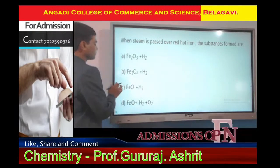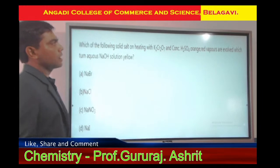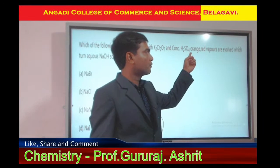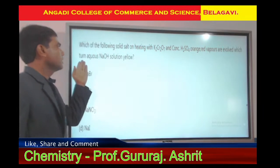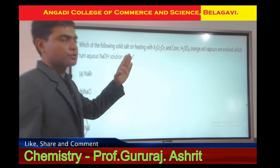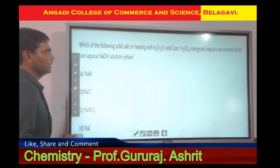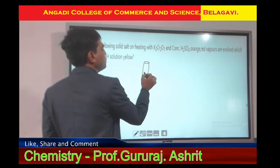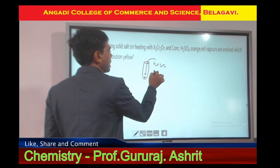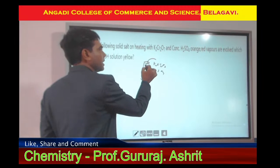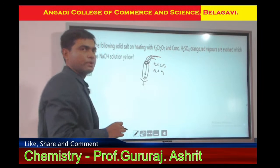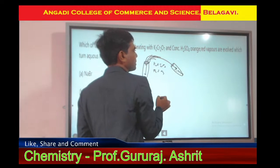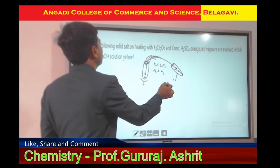Next, we move to the other question: which solid salt, on heating with potassium dichromate and concentrated H₂SO₄, evolves orange-red vapors which turn aqueous NaOH solution yellow? So, you take a test tube with a salt, mix it with K₂Cr₂O₇ and H₂SO₄, and orange-red vapors are produced. You pass these vapors through another test tube containing NaOH basic solution, and the solution turns yellow.